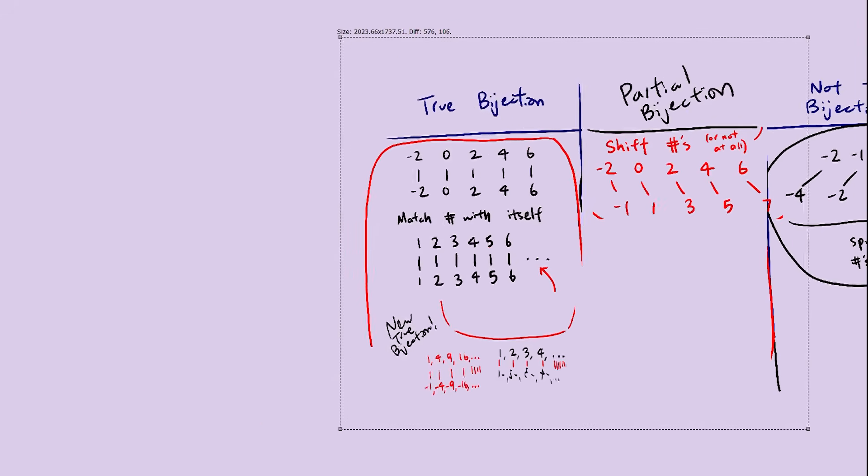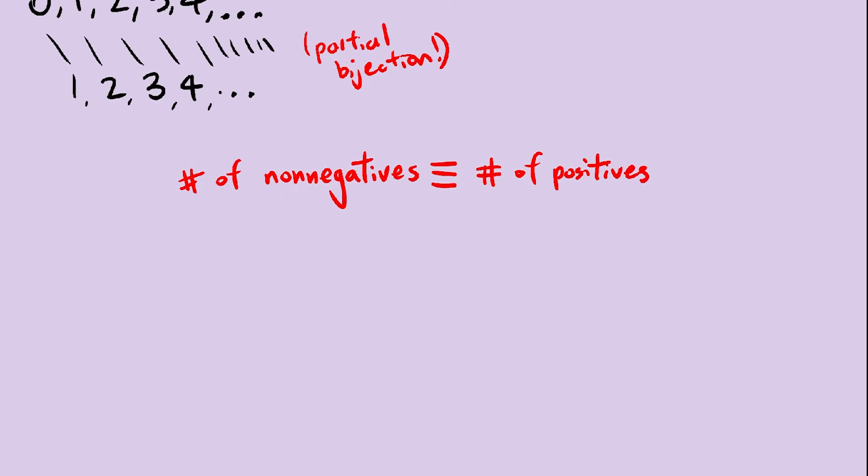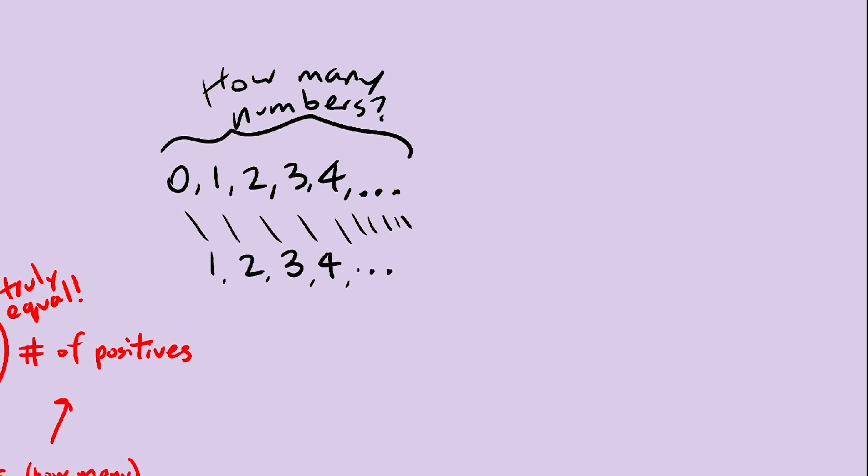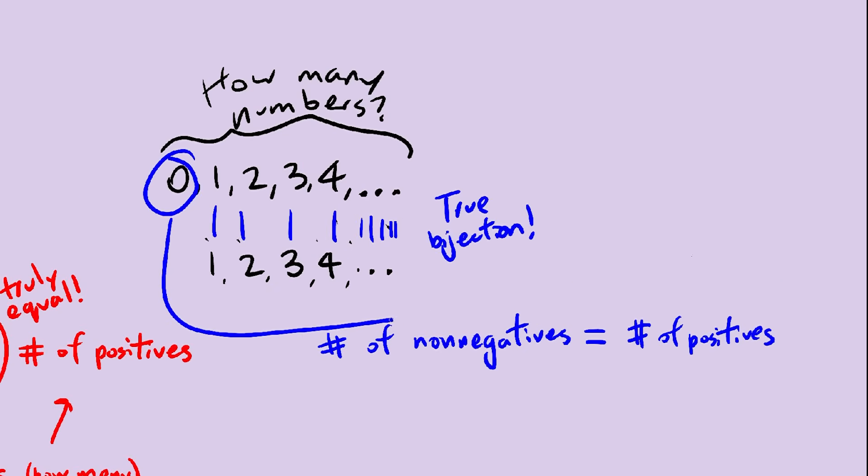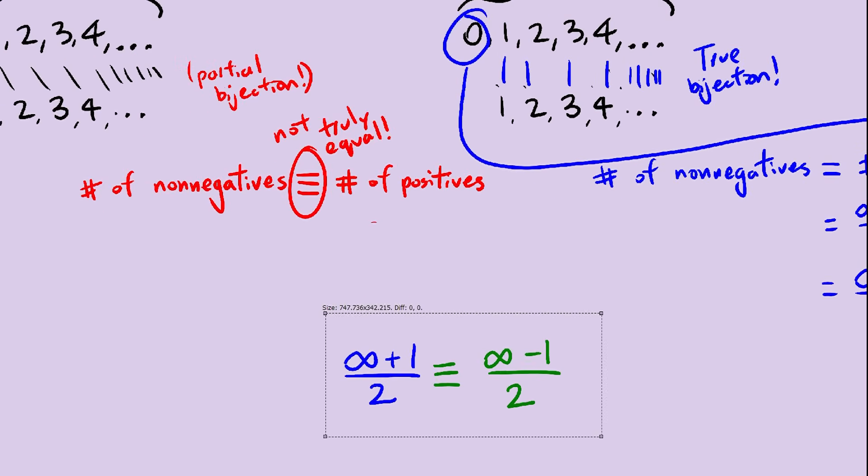The difference is that true bijections can help determine truly equal, but partial bijections can only help determine partially equal. So we would downgrade shift bijections to the partial bijection category. So now, using all this new stuff, let's find the size of the non-negative integer set. First, using shift bijections, we can determine that the size of the set is partially equal to the size of the positive integer set. However, the two sizes, or cardinalities, are not truly equal. Using a true bijection like this and adding 1, we can determine that there are infinity plus 1 over 2 non-negative integers. And we don't have a paradox anymore.